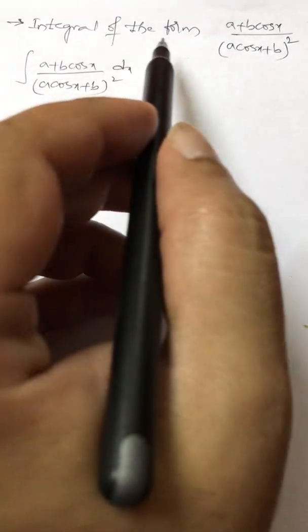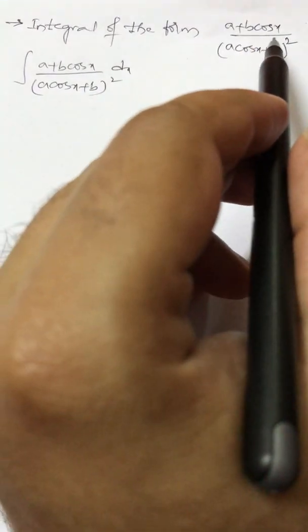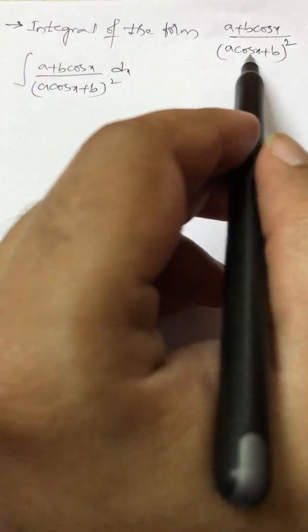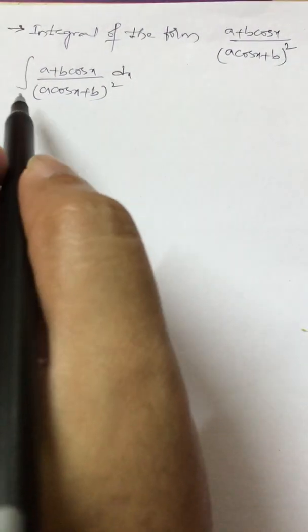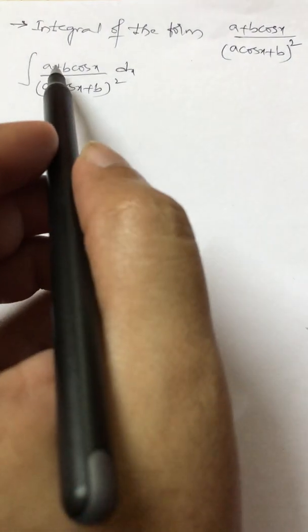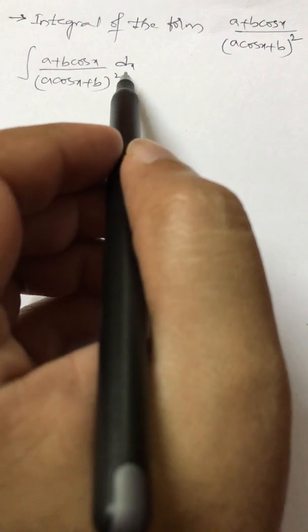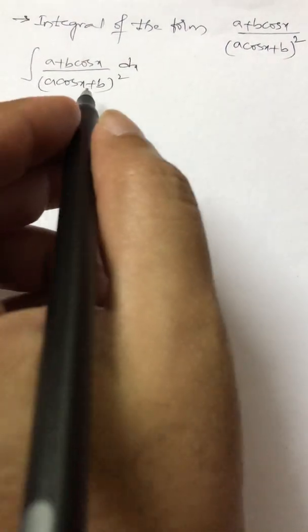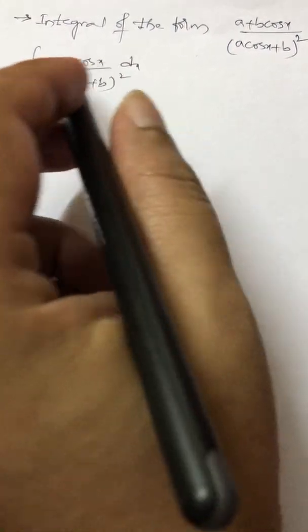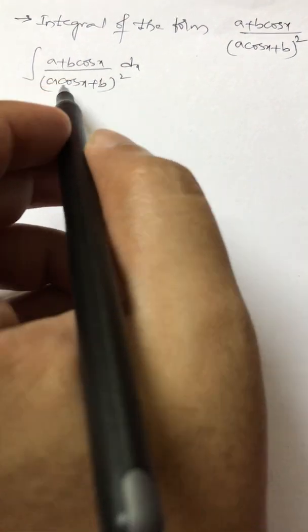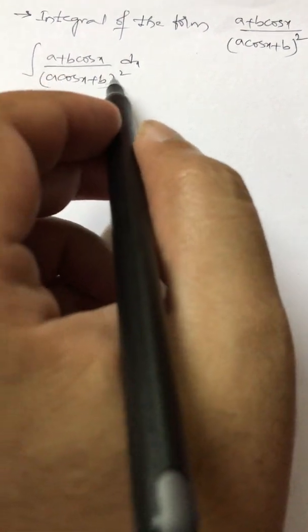We consider an integral of the form (a + b cos x) / (a cos x + b)² dx. This integral is similar to the integral of (a + b sin x) / (a sin x + b)² dx.